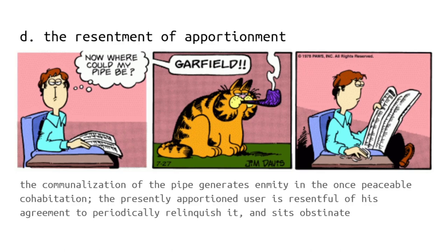In this fourth arrangement, the resentment of apportionment, John wonders where could his pipe be, then immediately calls out Garfield, and then returns to his newspaper drumming his fingers on the table in a gesture of impatience. Clearly he knows that his pipe is being taken by Garfield. We must conclude that John and Garfield have come to some arrangement to share their pipe between them. John calls out because it is his turn with the pipe and he needs Garfield to bring it to him. But Garfield sits obstinate and statuesque — he refuses to bring the pipe.